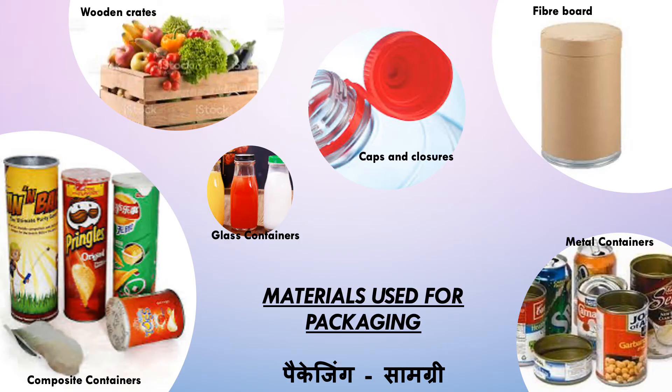In this picture, you can see different types of packaging materials which are commonly used in the food industry today, such as glass containers, composite containers, fiber boards, wooden crates, caps, metal containers, etc. These are selected depending upon the type of food product, the required shelf life and storage conditions.